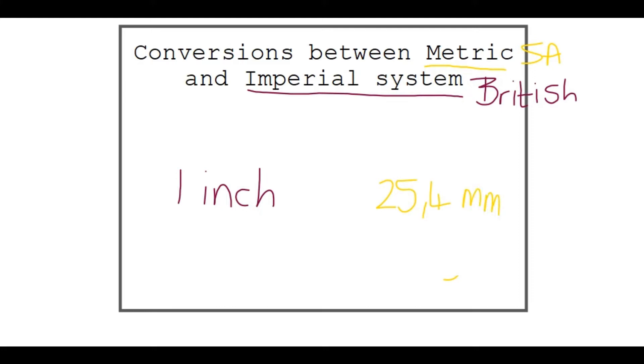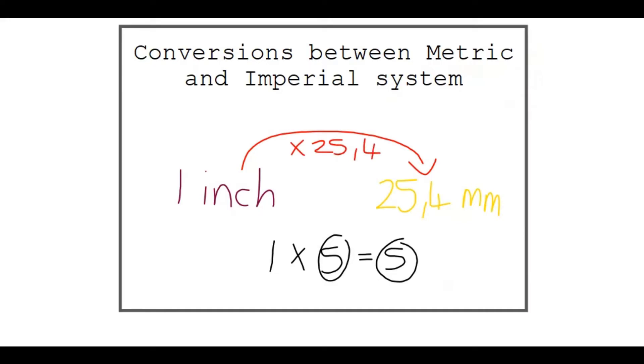Now, say I want to go from inch to millimeters. How do you go from one to any number? Let's say one to five. How would you go there? You would multiply by that number to get the same number. So, I'm going to multiply by 25.4 to get 25.4 again.